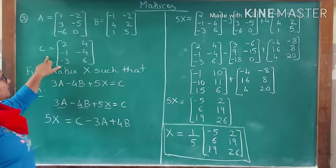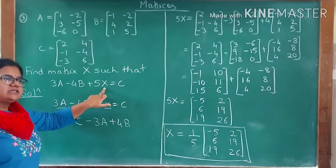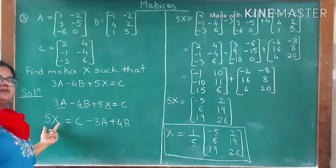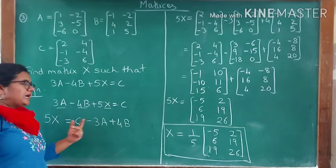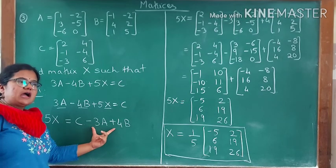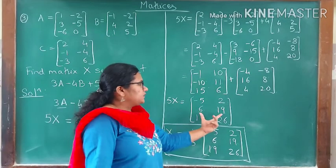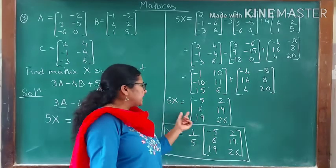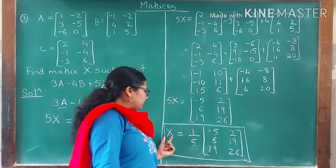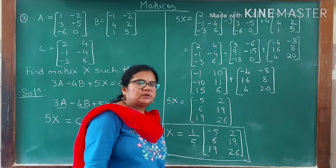They gave three matrices and an equation, and we had to find the unknown matrix X. We kept X on the left-hand side and moved all other matrices to the right-hand side, solved to get 5X equal to the result matrix, then divided the scalar to isolate X. So finally X equals one-fifth into that matrix.